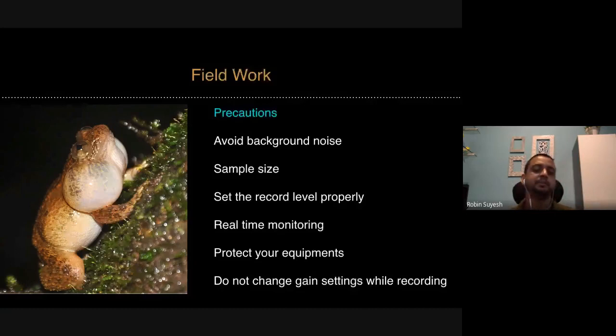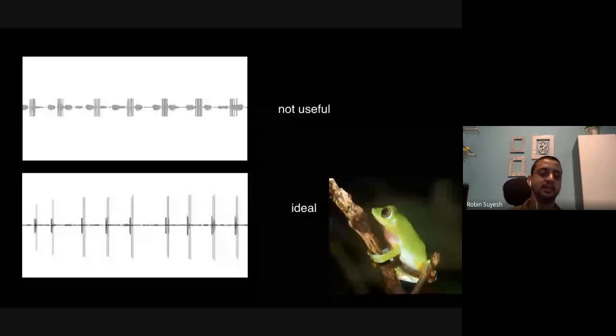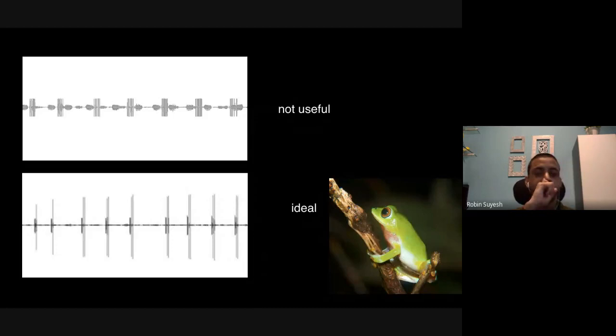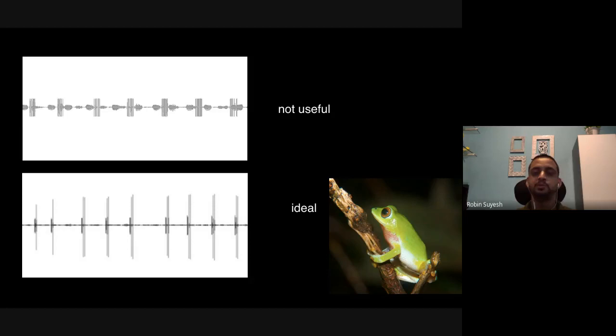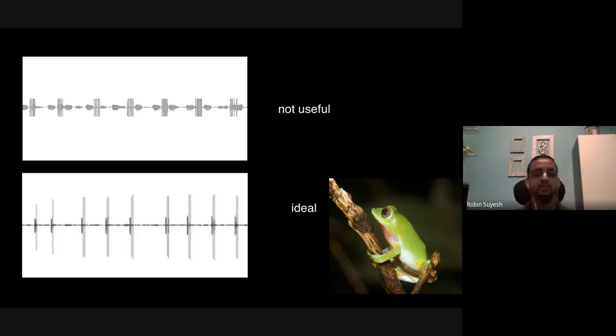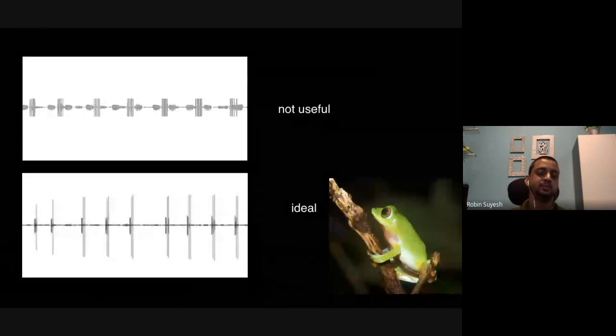This image shows a recording not useful for scientific studies and the other one which is ideal. The top recording is a mixture of maybe two species or two individuals calling simultaneously with a lot of background noise, and the amplitude of the call is very small. The top one is not suitable for scientific studies. The ideal situation is when you get a recording like the one below — a single individual, clean signal, proper amplitude. That is what you need to see when you want to study acoustics in amphibians.